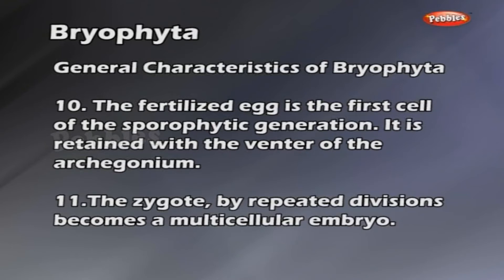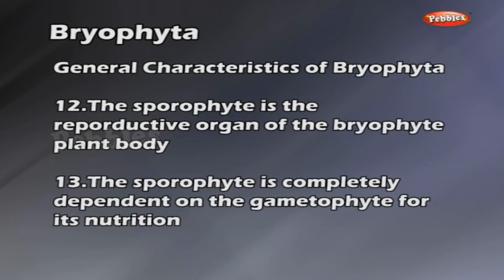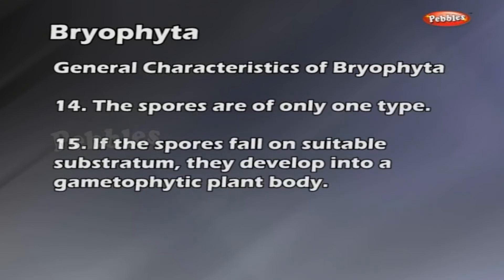Water is essential for the act of fertilization. The fertilized egg is the first cell of the sporophytic generation. It is retained within the venter of the archegonium. The zygote, by repeated divisions, becomes a multicellular embryo. The sporophyte is the reproductive organ of the bryophyte plant body and is completely dependent on the gametophyte for its nutrition. The spores are of only one type, and if they fall on a suitable substratum, they develop into a gametophytic plant body.